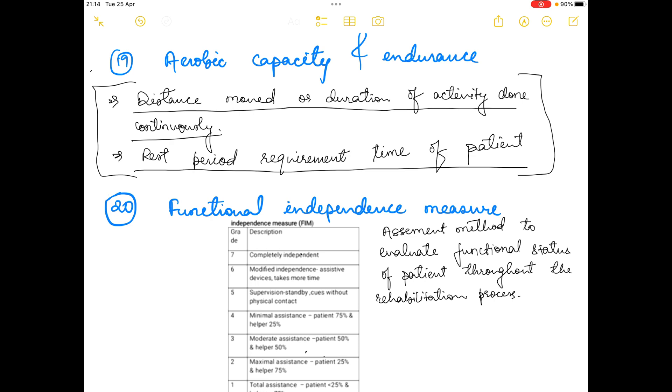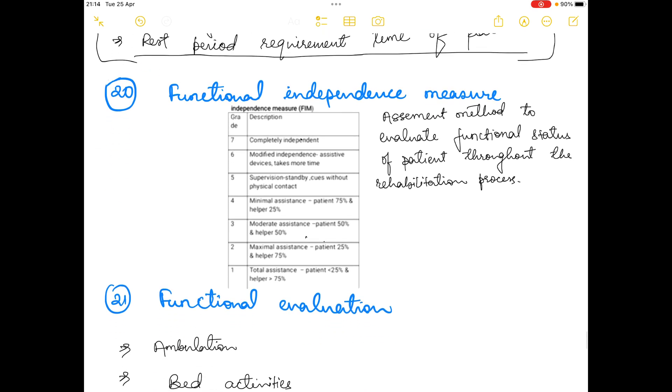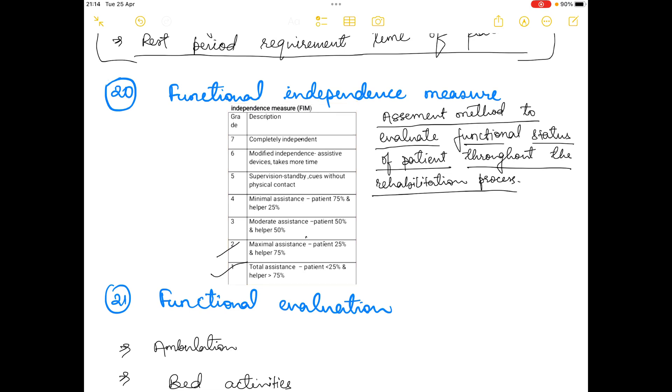The next thing is Functional Independence Measure. What is Functional Independence Measure? It is an assessment method to evaluate functional status of the patient throughout the rehabilitation process. It has seven skills. Grade seven means the person is completely independent and grade one means the person needs total assistance.